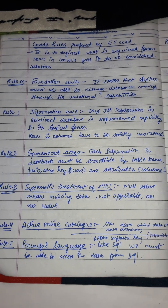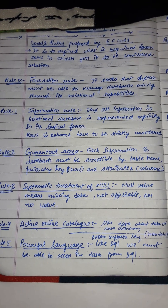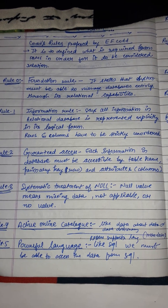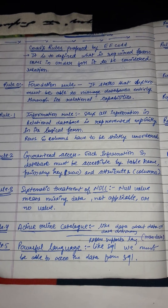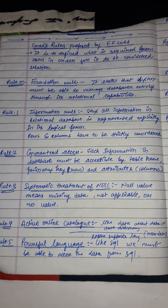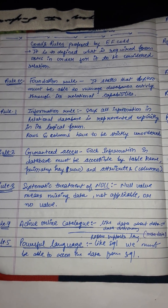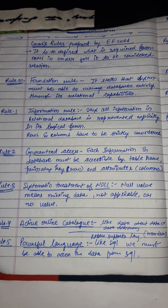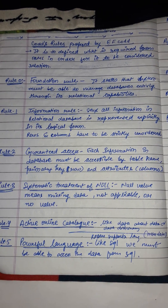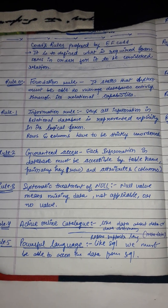Rule 5 is the comprehensive data sub-language rule, referring to a powerful language like SQL. We must be able to access the data using SQL. The database must support at least one clearly defined language that includes functionality for data definition, data manipulation, data integrity, and data transaction control. All commercial relational databases use forms of SQL as their supported comprehensive language.